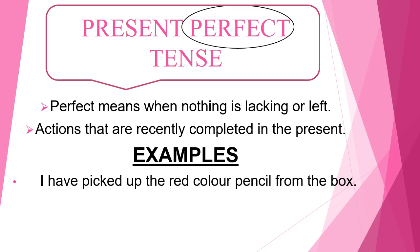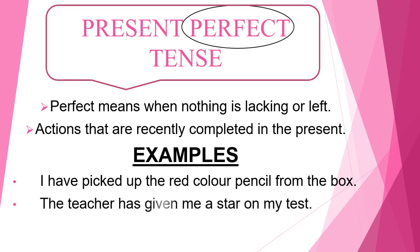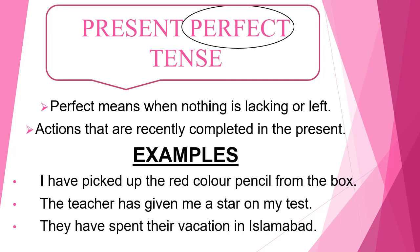Let us look at a few examples of present perfect tense: 'I have picked up the red color pencil from the box.' 'The teacher has given me a star on my test.' 'They have spent their vacation in Islamabad.' All these are examples of present perfect tense — actions that are recently completed.